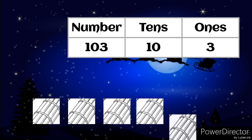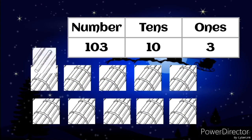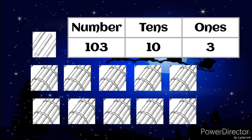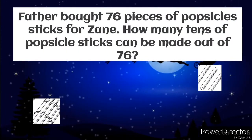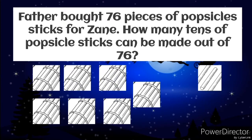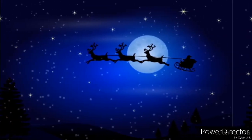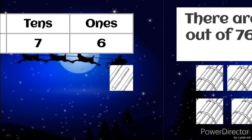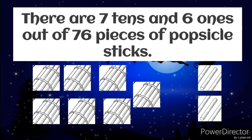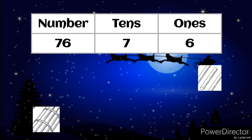Now let's look at the number illustration. I guess you understand further, right? So let's proceed to the next example. How many tens of popsicle sticks can be made out of 76? Now let's look at the number illustration. There are 7 tens and 6 ones out of 76 pieces of popsicle sticks.